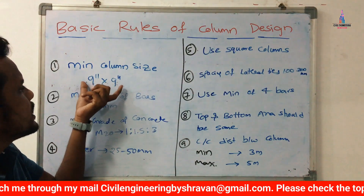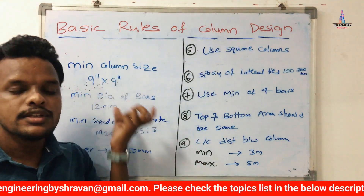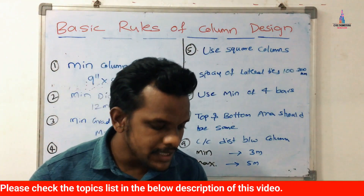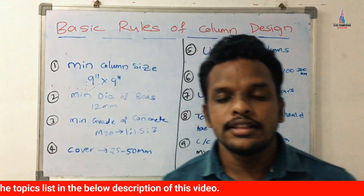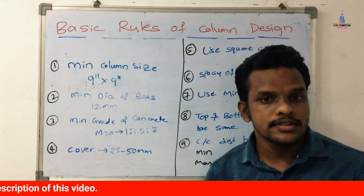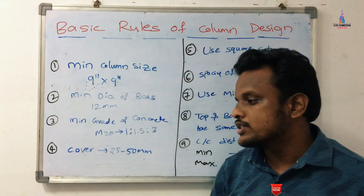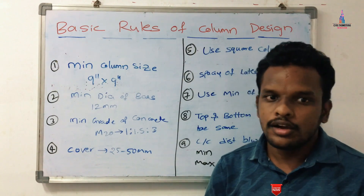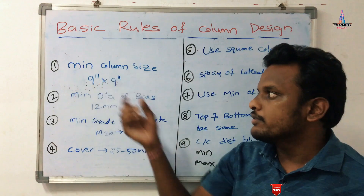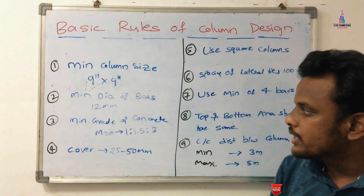The first basic rule: the minimum column size should be taken as 9 inches cross 9 inches. As per the Indian standard, it is suggested that the minimum dimensions of the column should be 9 inches cross 9 inches if you want to construct any building of ground story or G plus one structure. This is the minimum column size we have to consider.